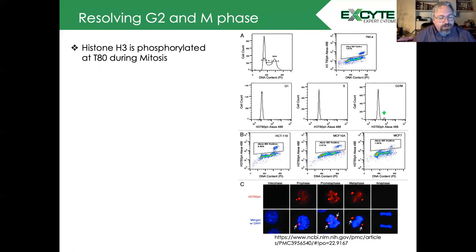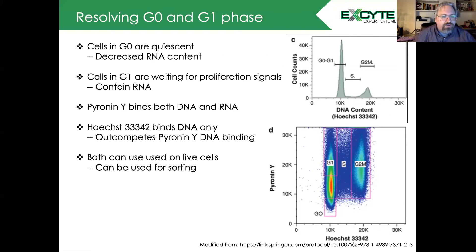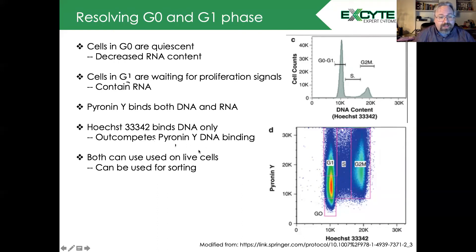The final portion of cell cycle analysis is the ability to detect the G0 and G1 phases. Cells in the G0 phase are quiescent and decrease their RNA content. Cells in G1, which are waiting for proliferation signals, contain normal amounts of RNA. Pyronin Y will bind to both DNA and RNA, while Hoechst 33342 binds to DNA only. So we can out-compete the Pyronin Y DNA binding by combining these two dyes together.